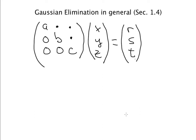Let's pause and look at the endpoint. Suppose we have a system and we've turned it into an upper triangular system — here's a fairly general upper triangular 3x3 system with coefficient matrix, variables x, y, z, and right-hand side r, s, t. The matrix is upper triangular, so it has zeros below the diagonal. The question is: does this system have a solution and can we find it easily? As long as a, b, and c are non-zero, the answer is yes — we can solve this by back substitution.